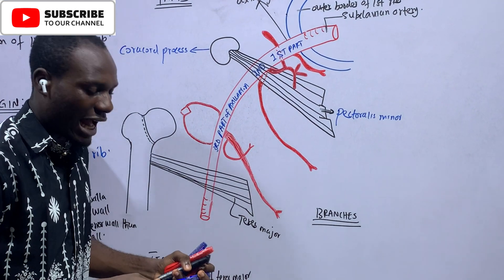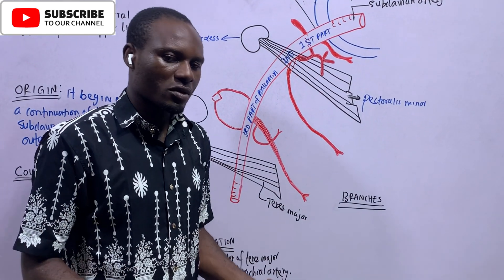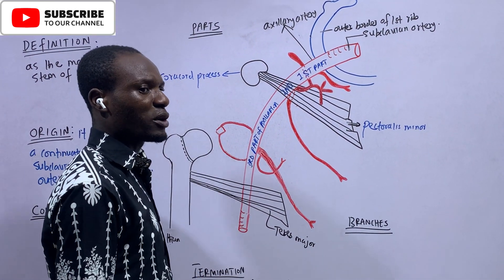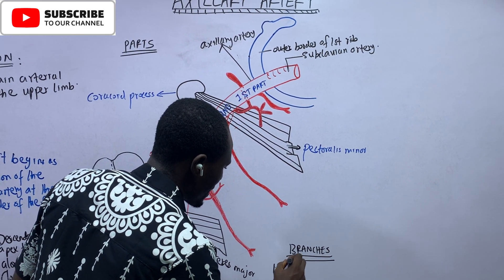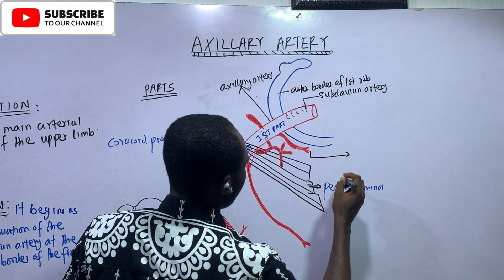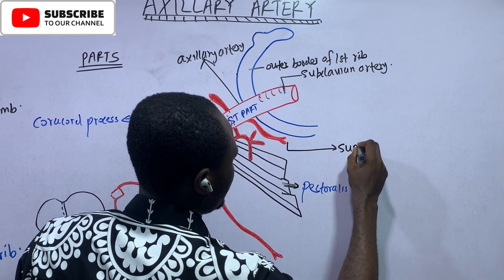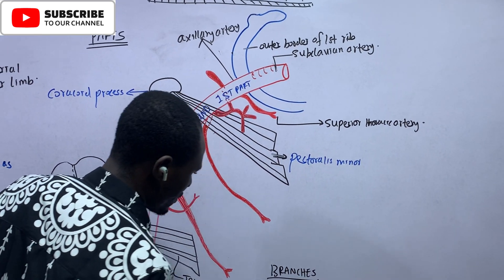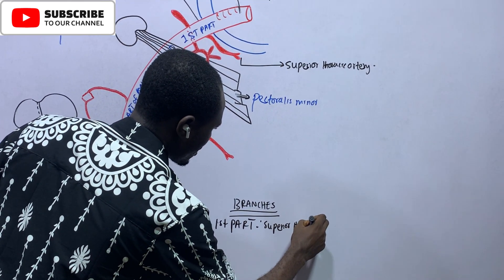Up next are the branches. Arteries are very benevolent — they deliver the oxygen they carry by giving rise to branches to tissues. So we have branches from the first part. There is this artery coming from the first part of the axillary artery, and it is called the superior thoracic artery. So from the first part, we have the superior thoracic artery.